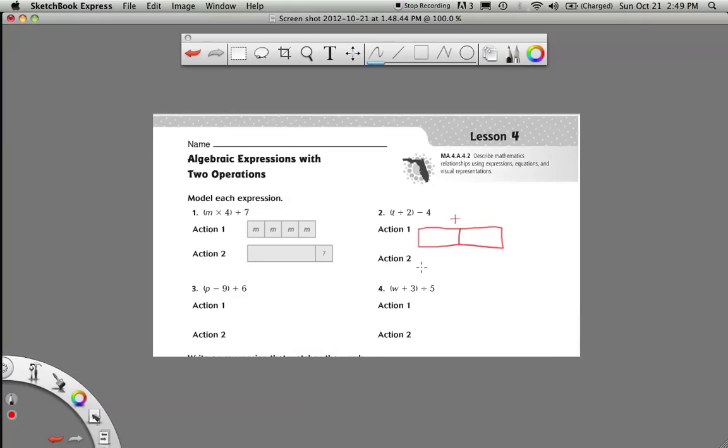Then we're going to take that and subtract. Sorry guys, I need to erase that. I did it a little too big. After we divided it by 2, we need to take what's left and subtract 4. So if I divided t into 2, I would be left with this and I would have to subtract 4 from that. Subtract is a dotted line. So there's my model for t divided by 2 and then subtract 4.